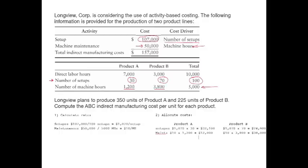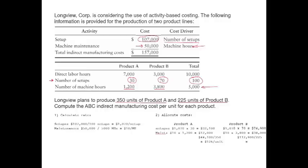The total estimated indirect cost of product A is $44,100. Since we plan to produce 350 units of product A, we divide $44,100 by 350 units to get a cost per unit of $126. Product B's total indirect cost is $112,900, and since we plan to produce 225 units of product B, we divide by 225 to get approximately $501.78 per unit.